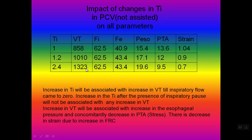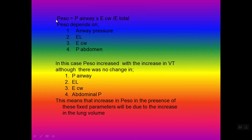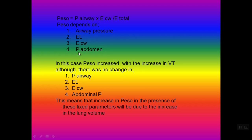So this is an important point. When we come to the formula: oesophageal pressure equals airway pressure multiplied by the elastance of the chest wall over the total elastance. So oesophageal pressure depends on airway pressure, lung compliance or elastance, chest wall compliance, and abdominal pressure — because chest wall elastance depends on the abdomen. These are the four items which determine oesophageal pressure. But in this case, the tidal volume itself has an effect on the oesophageal pressure, even though airway pressure, lung compliance, chest wall compliance, and abdominal pressure were all fixed.